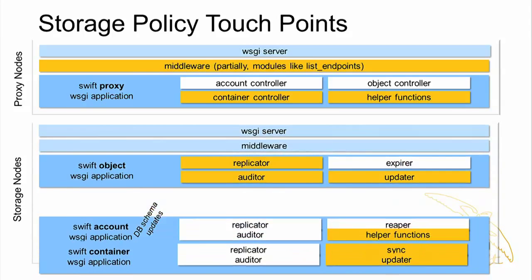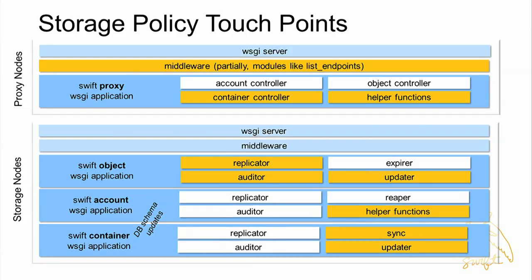This is a super high-level software architecture diagram of Swift showing components that run on the proxy server at the top, and at the bottom the components that run on the various servers — container, object, and storage. The ones colored in orange are where we've had to do a significant amount of work to get storage policies to become a reality. It's been close to 5,000 lines of code out of a total of about 60,000 lines including test code — a pretty significant change that touches a lot of places, which is kind of amazing because the concept is so simple.